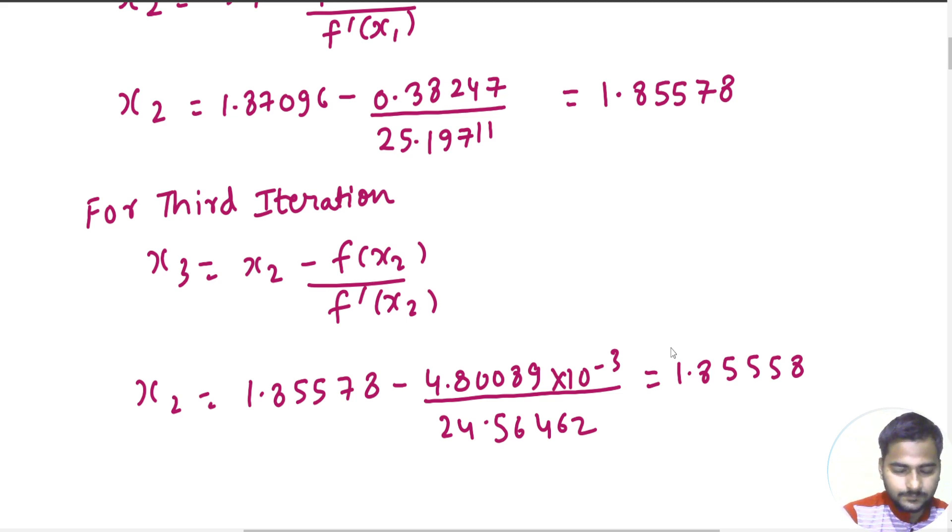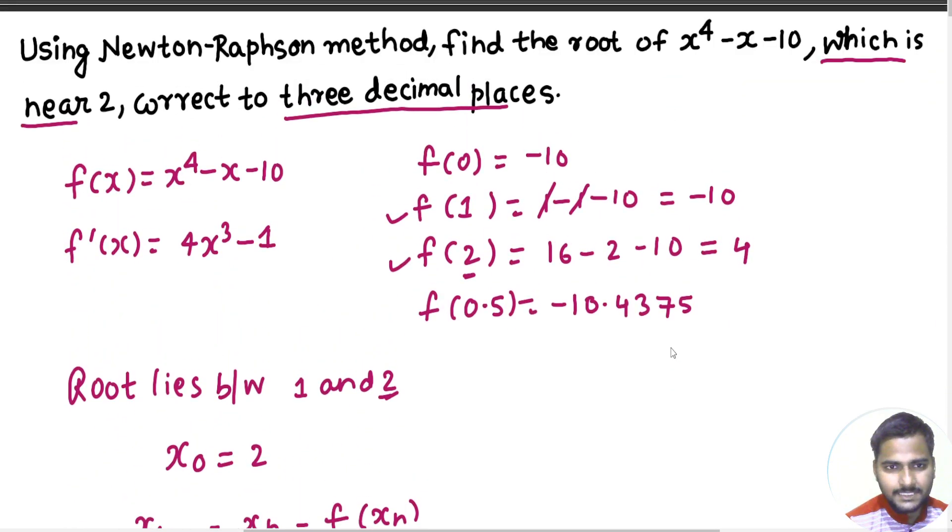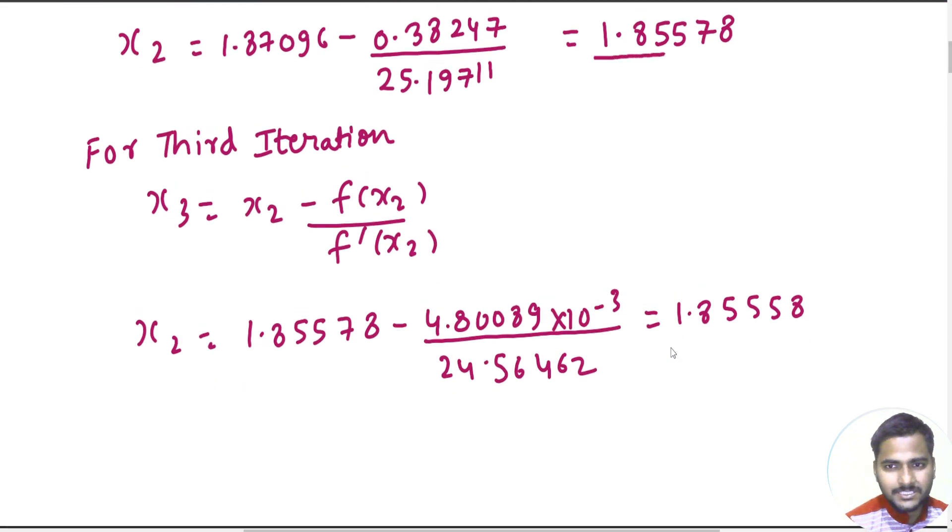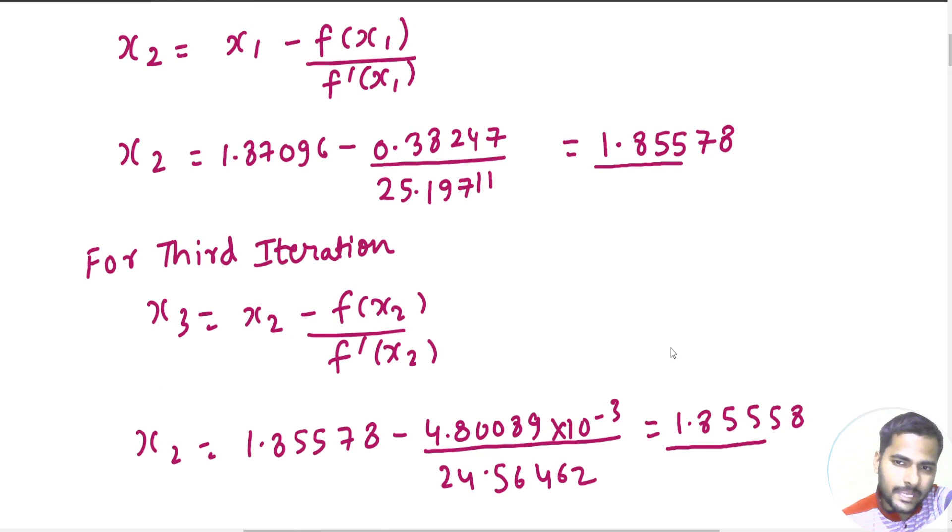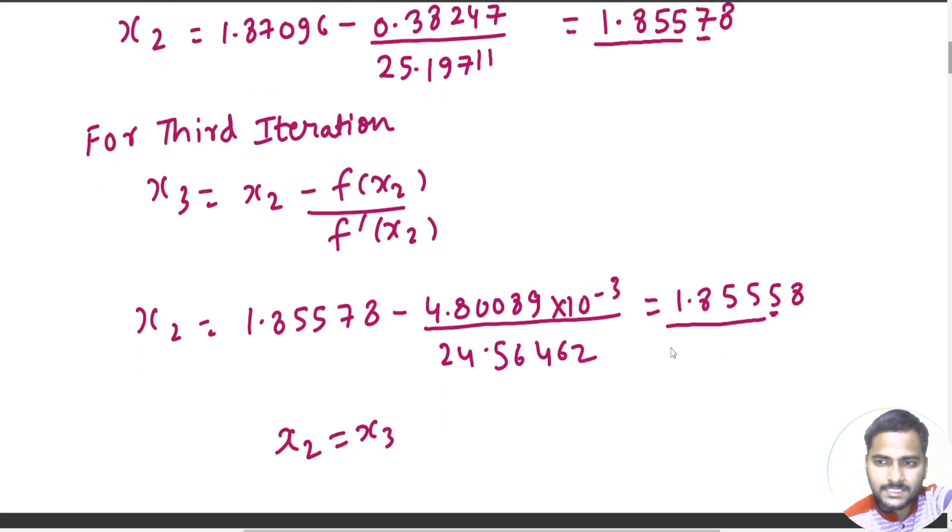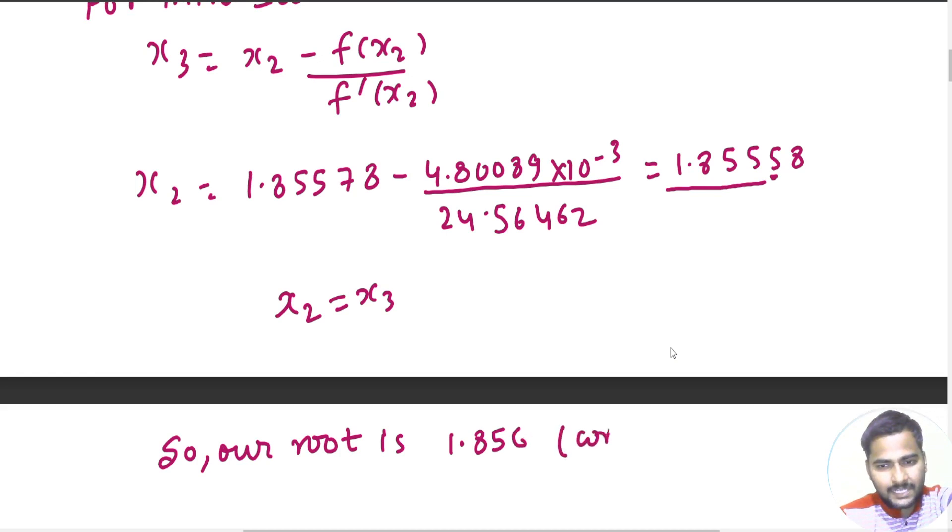Now if I see, because there are still 3 decimal places, so anyway I am getting it matched till 3 decimal places so I will stop here. Because x2 equals to x3, so our root will be 1.85. Now the last one we have to round it off, so 855 after that it is 7 here and 5 here, so in both cases we will get 6 here. So 1.856, correct up to 3 decimal places.